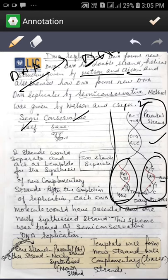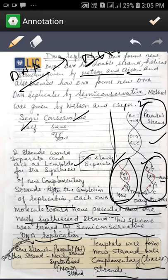Now these two strands would separate and act as template for the synthesis of new complementary strands. After the completion of replication, each DNA molecule would have parental strand and one newly synthesized strand. So this is the newly synthesized. This scheme was termed as semi-conservative DNA replication. So templates will form a new strand with complementary bases. Here one strand is parental and the newly synthesized is the new strand. So this type of replication is known as semi-conservative replication.